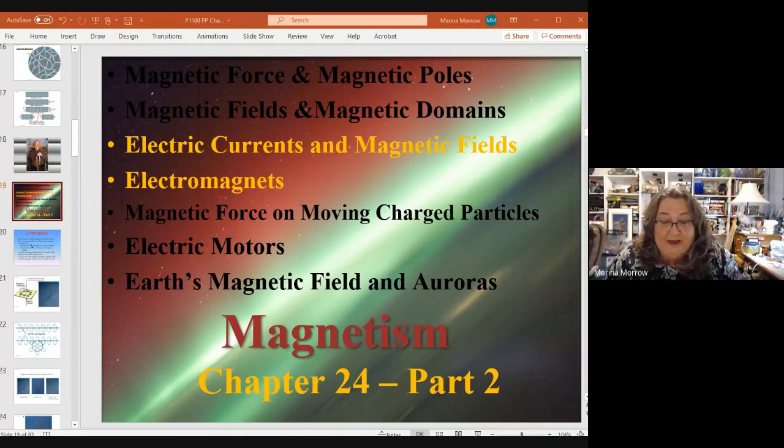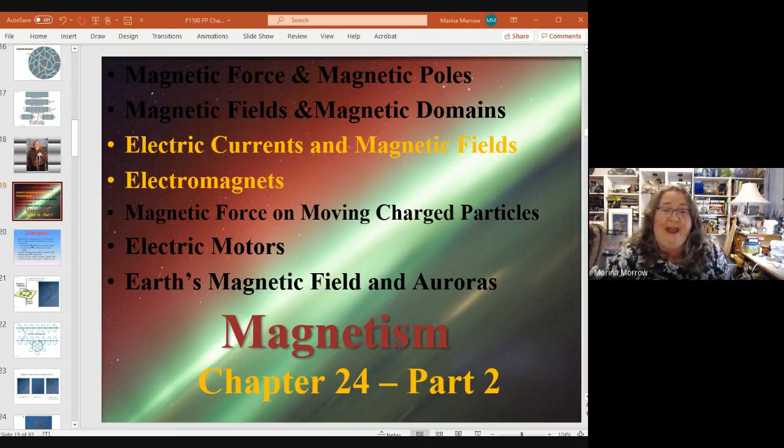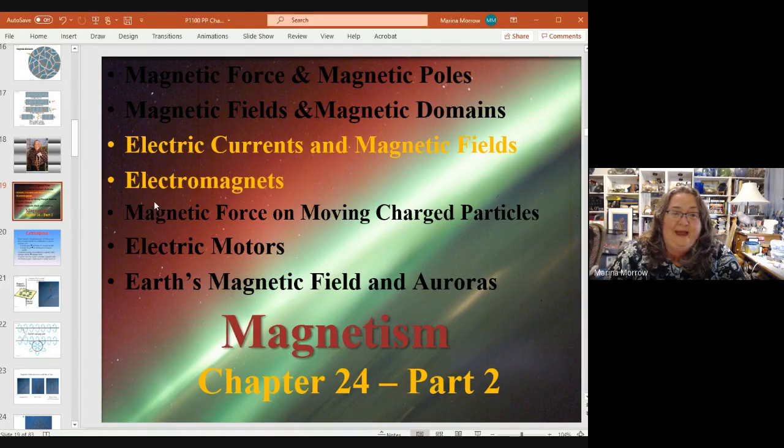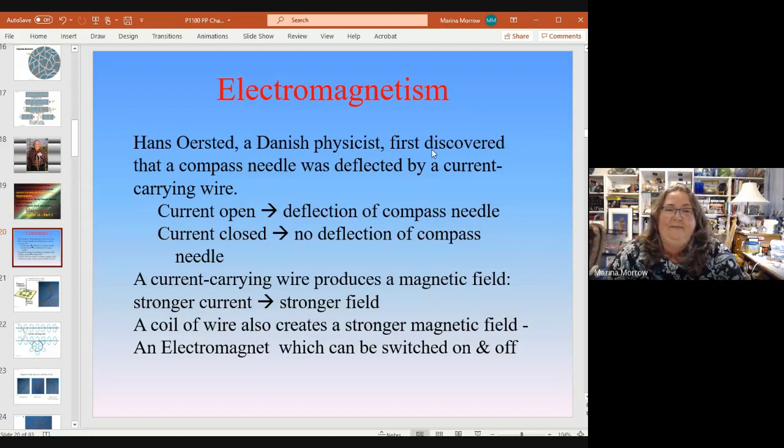Okay, in part two of chapter 24 we're going to be looking at how electric currents create magnetic fields and the relationship between those. We'll also be looking at electromagnets. It was discovered by Hans Oersted, I think in the 1800s.